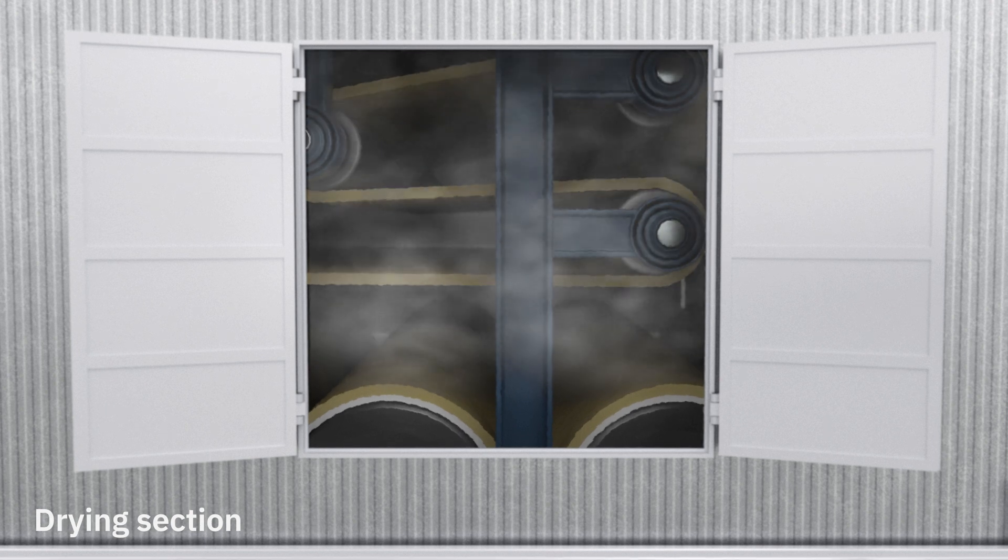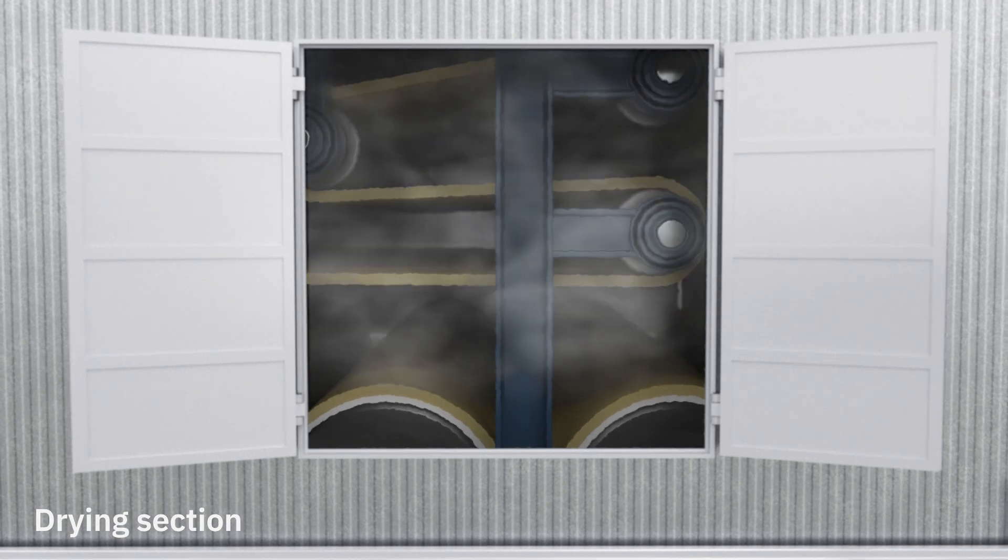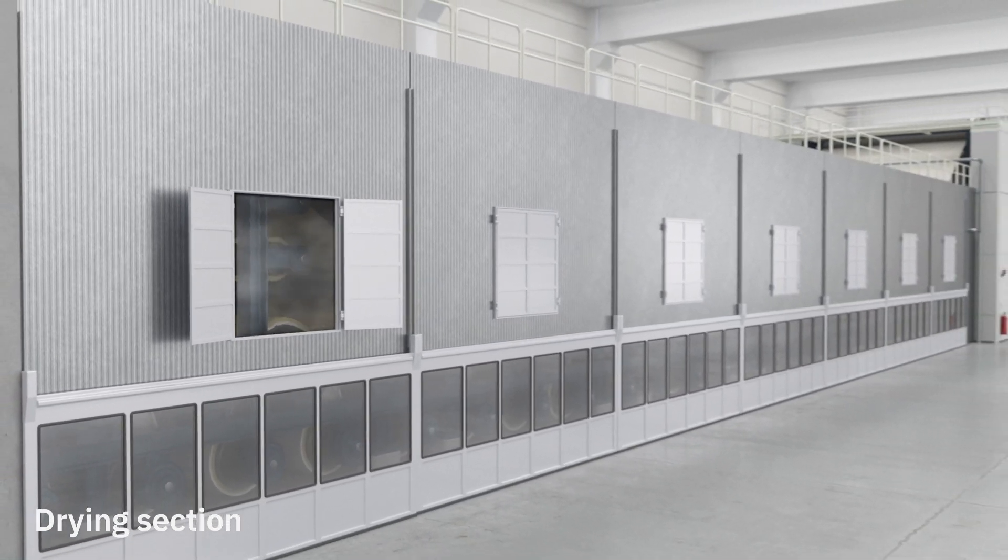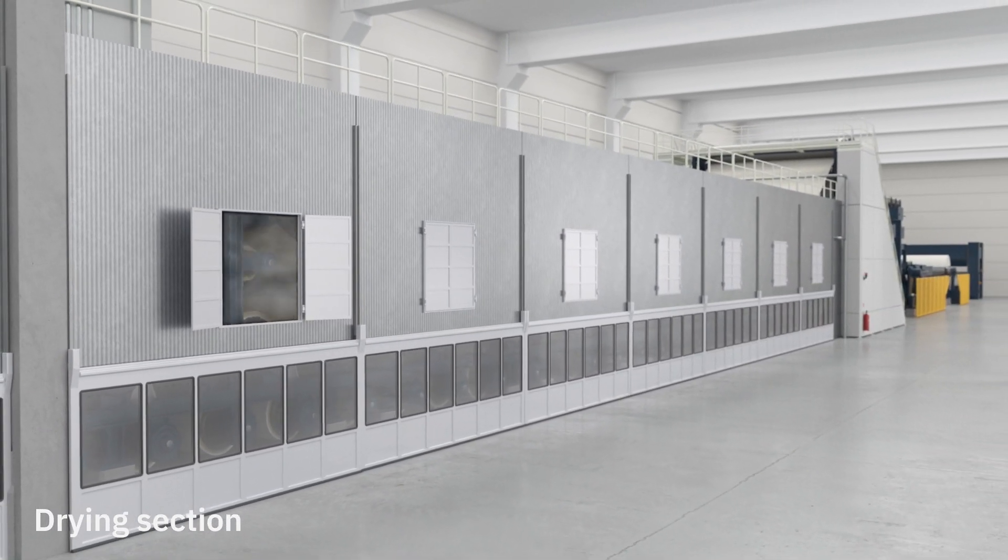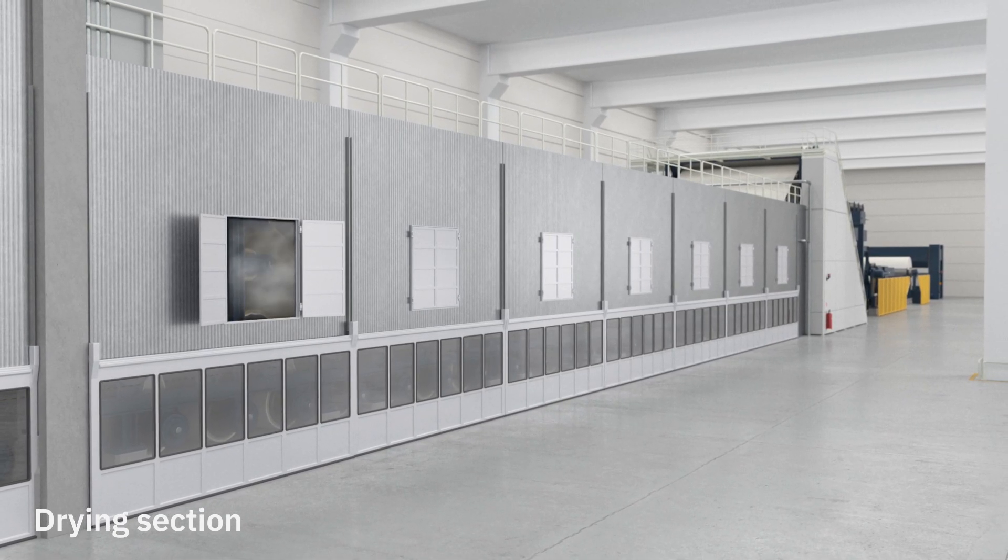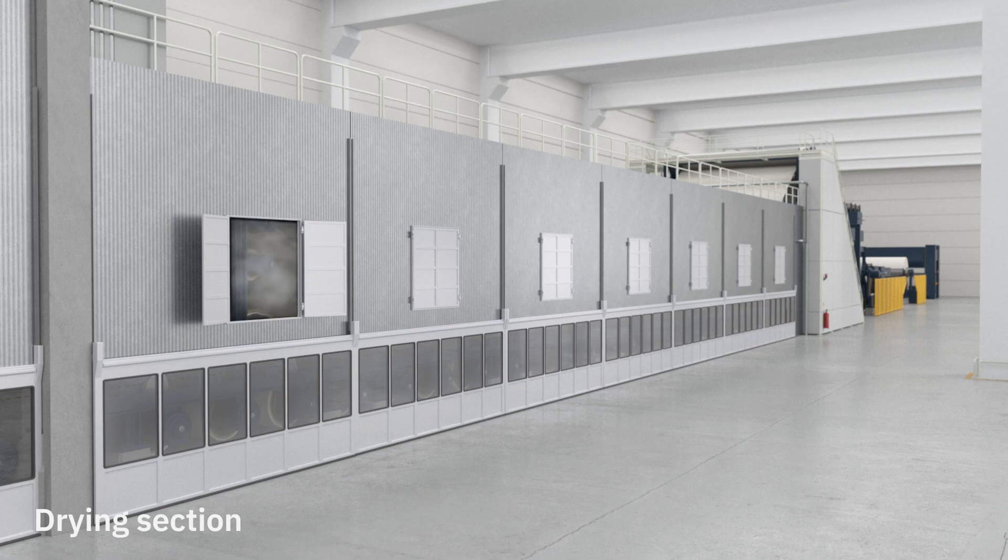After the dryer, the paper has reached its final moisture content of about 7-8%. But the paper has a rough surface and the profile across the machine is not optimized. To optimize the paper quality after the drying section, the paper gets to the calender.